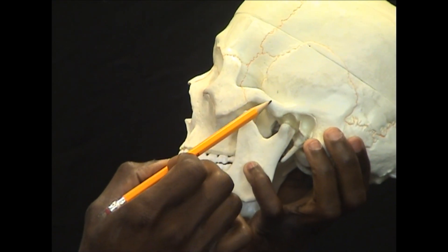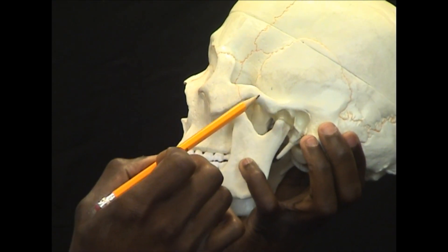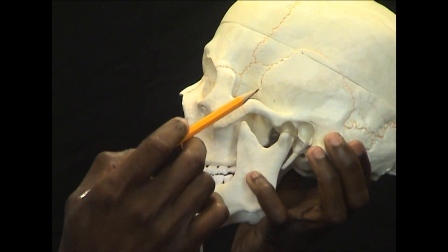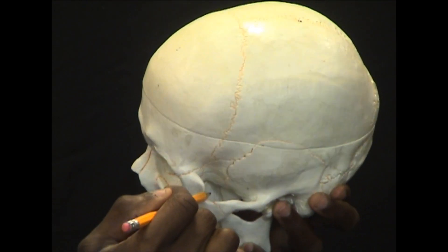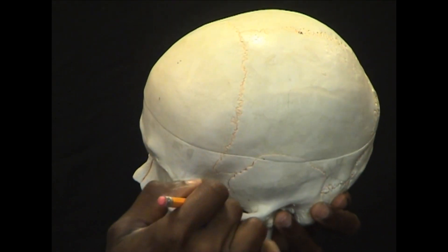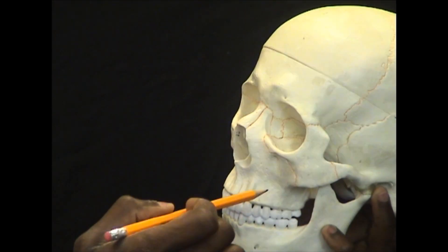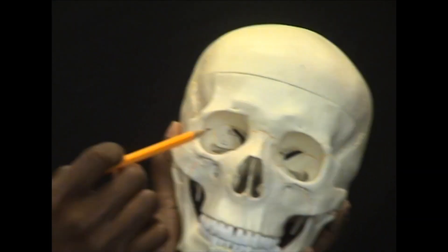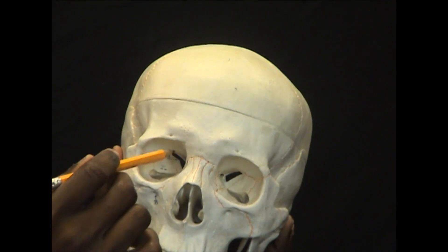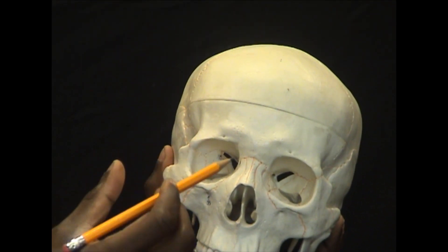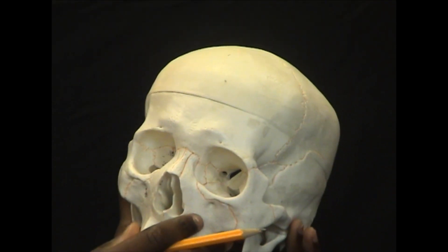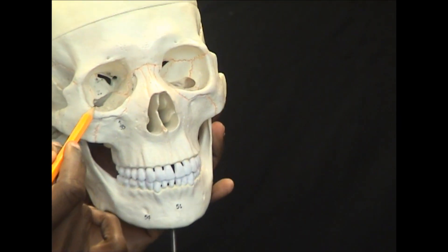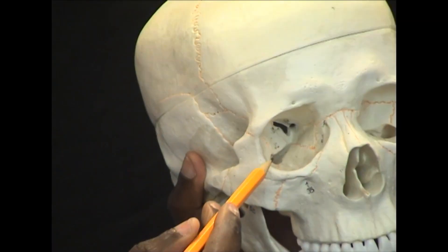The zygomatic process is part of the temporal bone, forming what's called the zygomatic arch. You'll notice that the orbital is not actually one bone, but is a collection of bones. So let's zoom in into that eye socket.